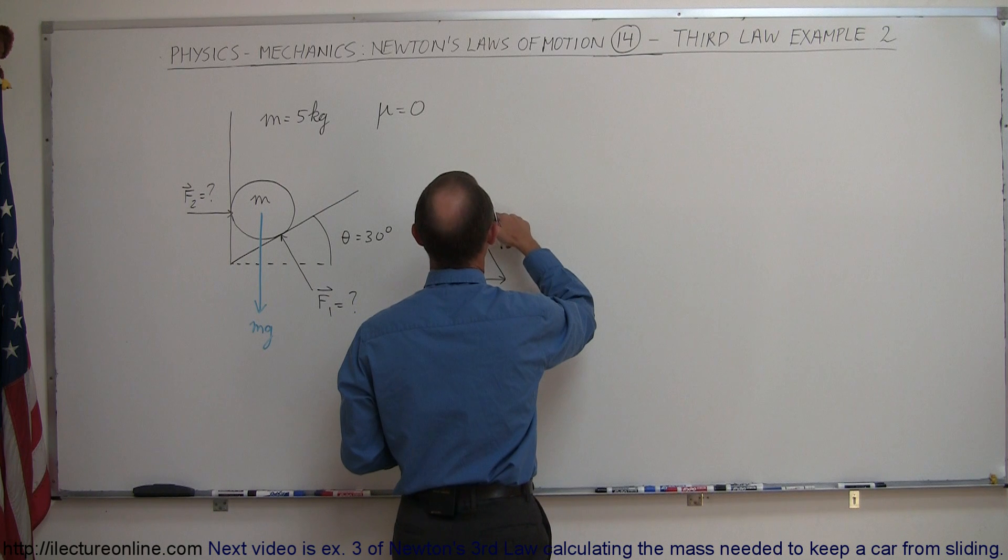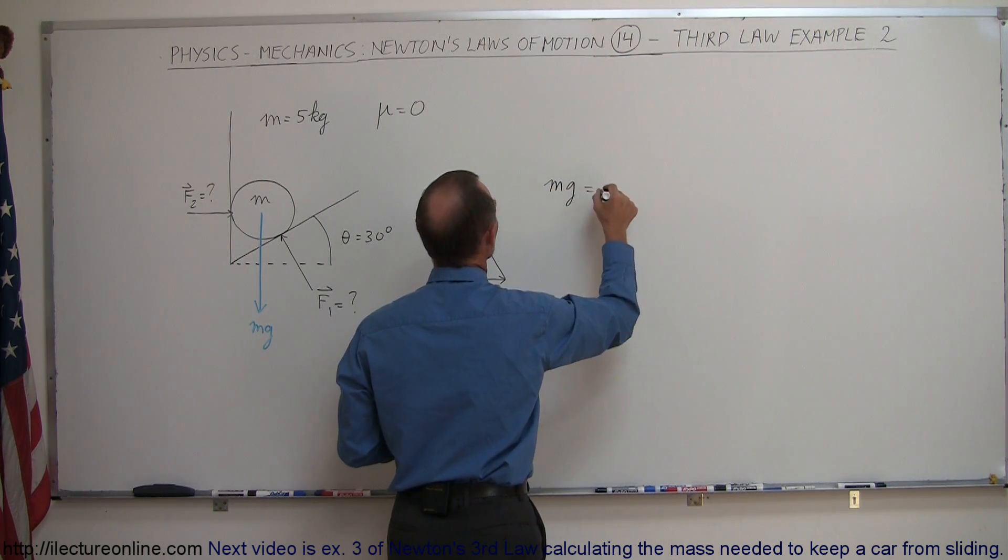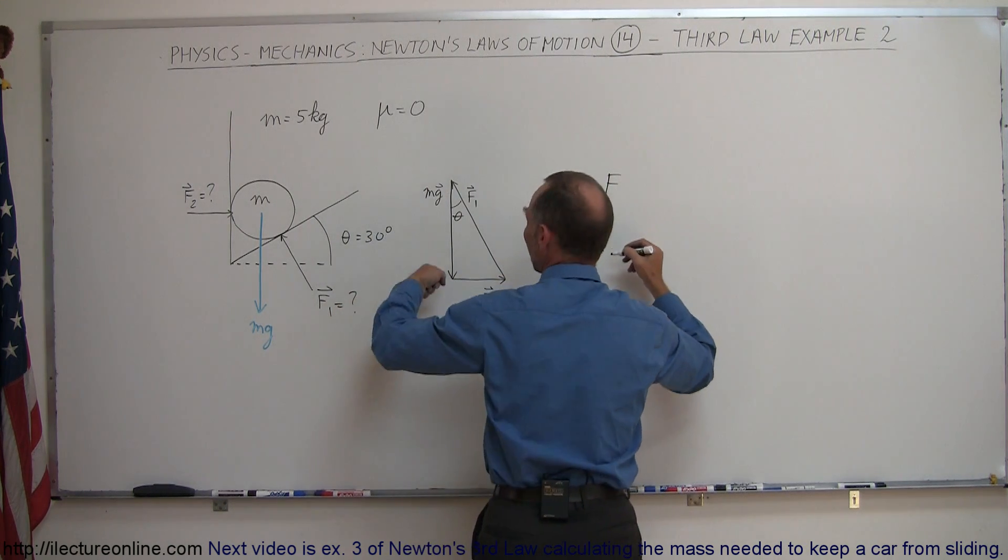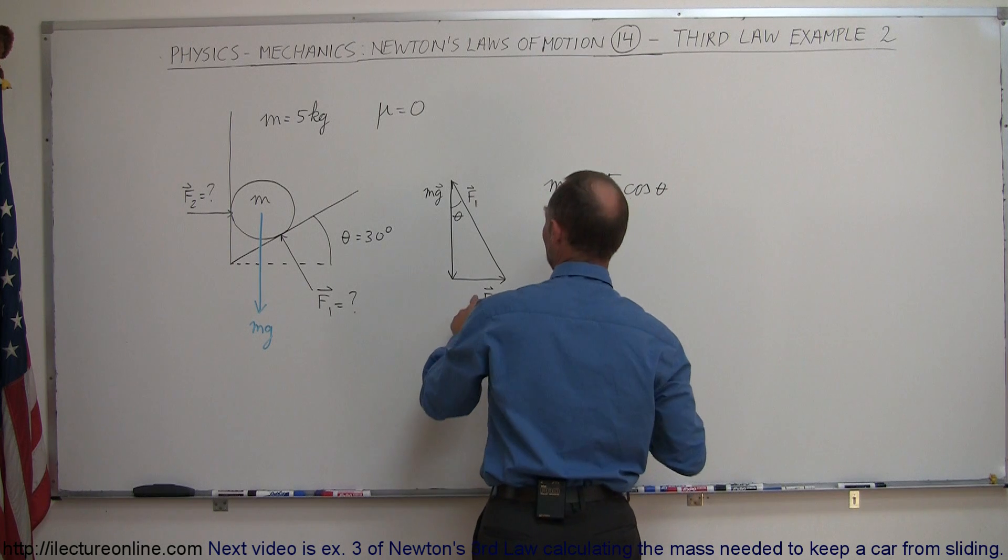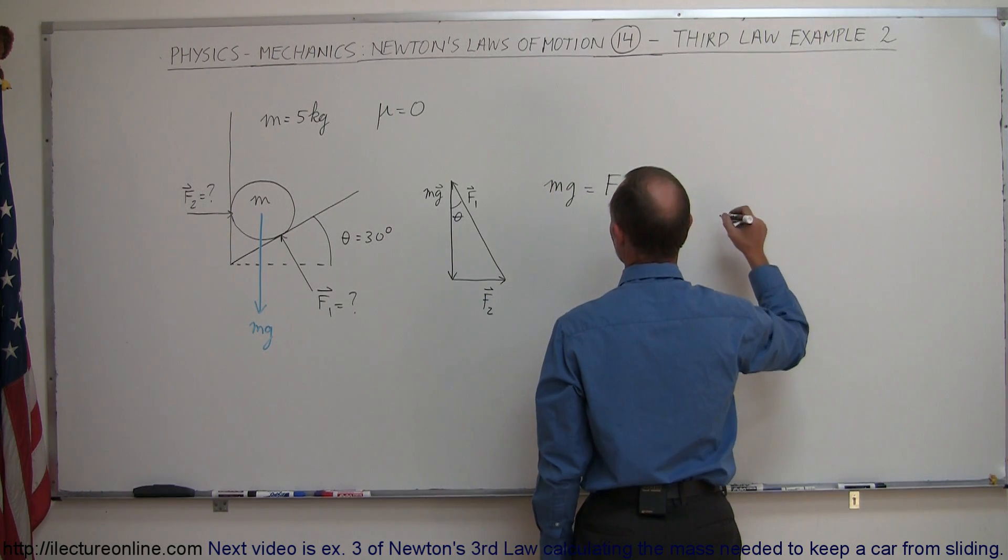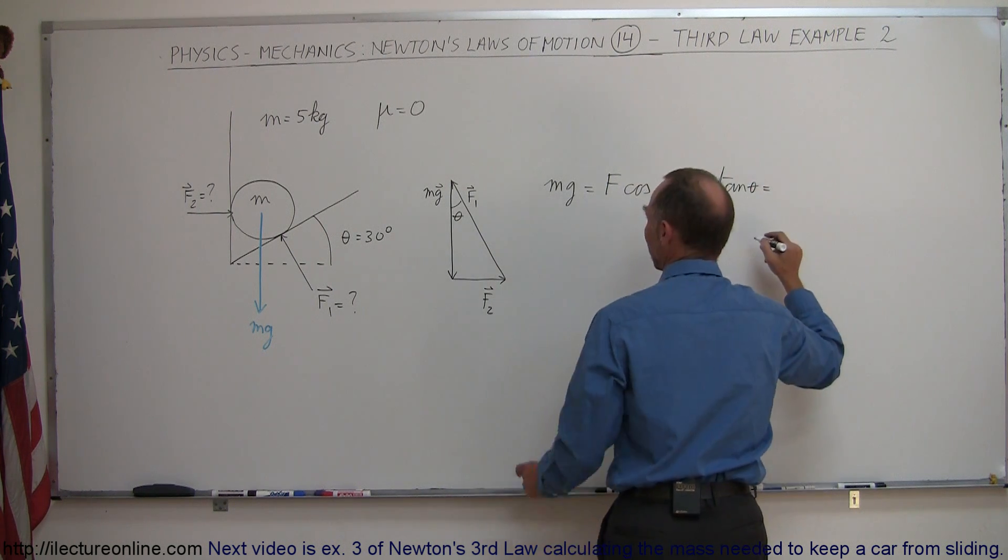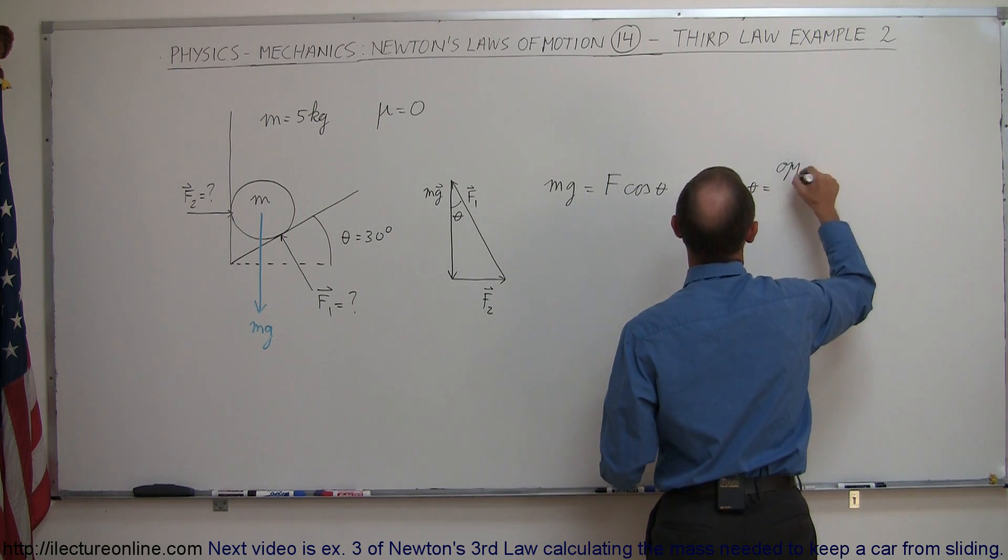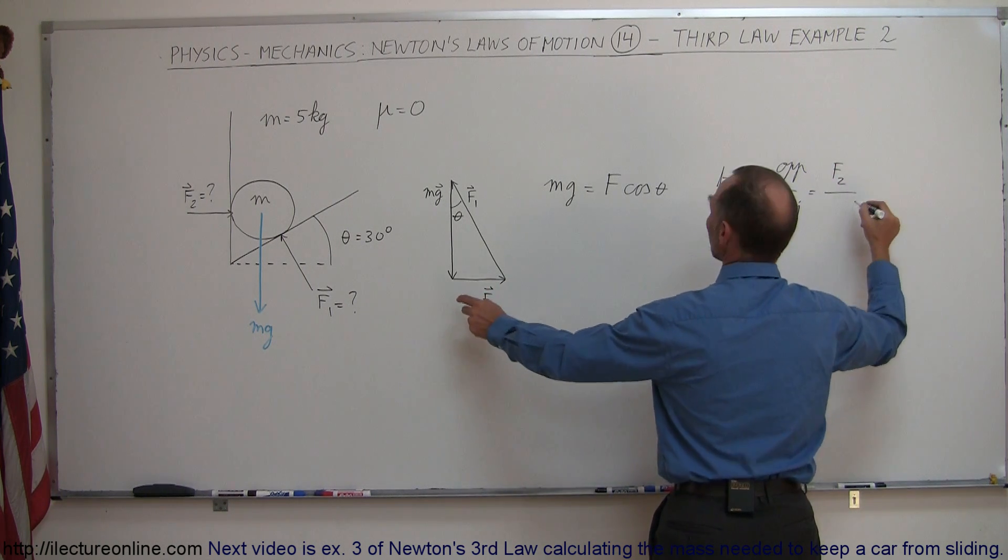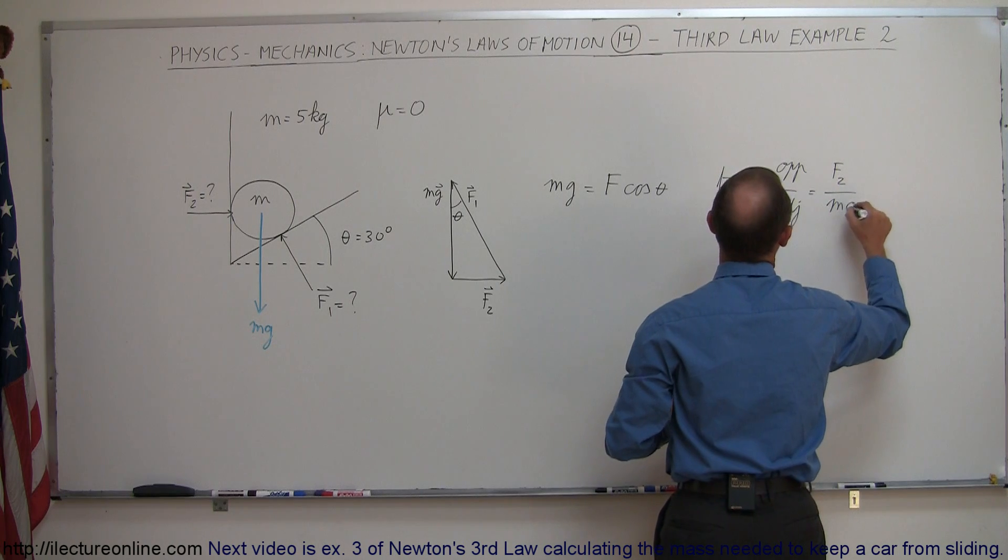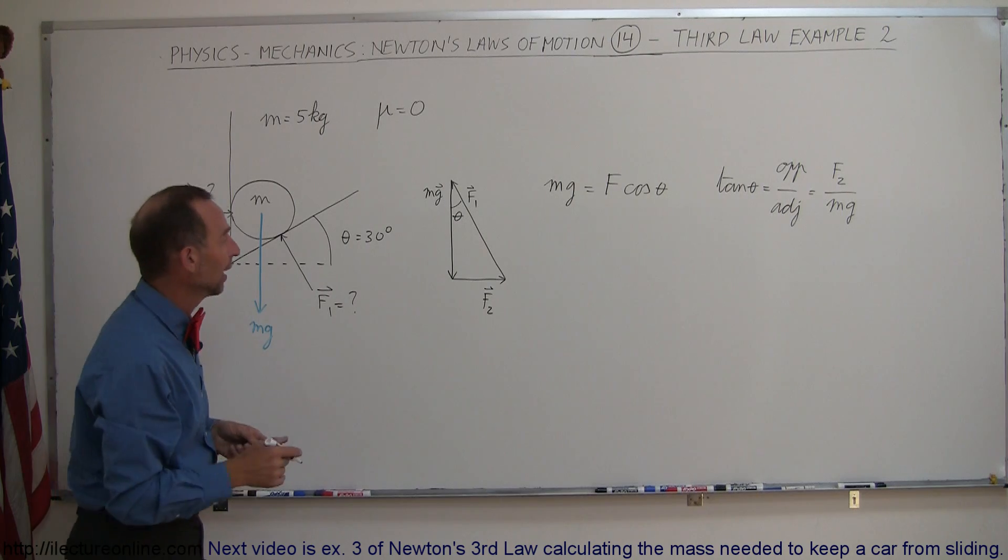Since F1 is the hypotenuse, we can say that Mg equals F1 times the cosine of theta, since Mg is the adjacent side to the angle. We can also say that the tangent of theta, which by definition equals the opposite side over the adjacent side, equals F2 divided by Mg. So we have two equations that will give us F1 and F2.